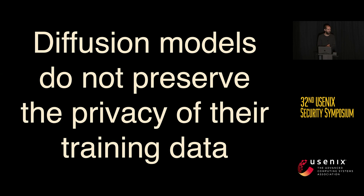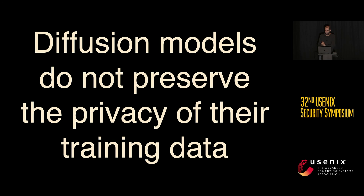Diffusion models do not preserve the privacy of their training data. On average they're pretty okay — most generations from a diffusion model are not training data. But in the worst case, they really can emit verbatim images from the training dataset. The reason this matters for privacy is that privacy is not an average-case metric. You can't say, 'I only leaked one person's medical data, everyone else's was fine.' We really have to be careful when we deploy these kinds of models in settings where we actually need to preserve the privacy of training data.